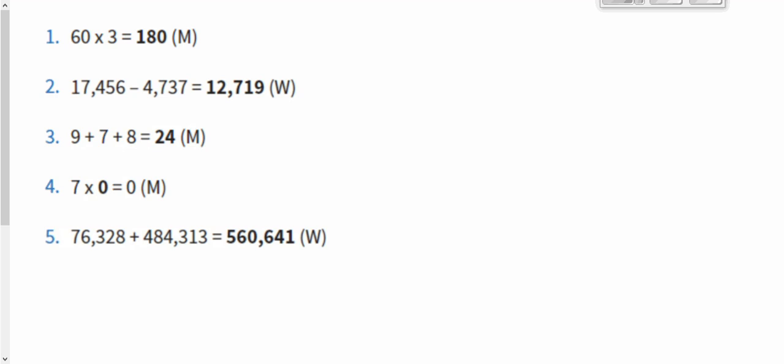Question number four. We need to fill the gap, but we know anything with an answer of 0. When we're multiplying, it must be times by 0. So 7 times 0 equals 0.